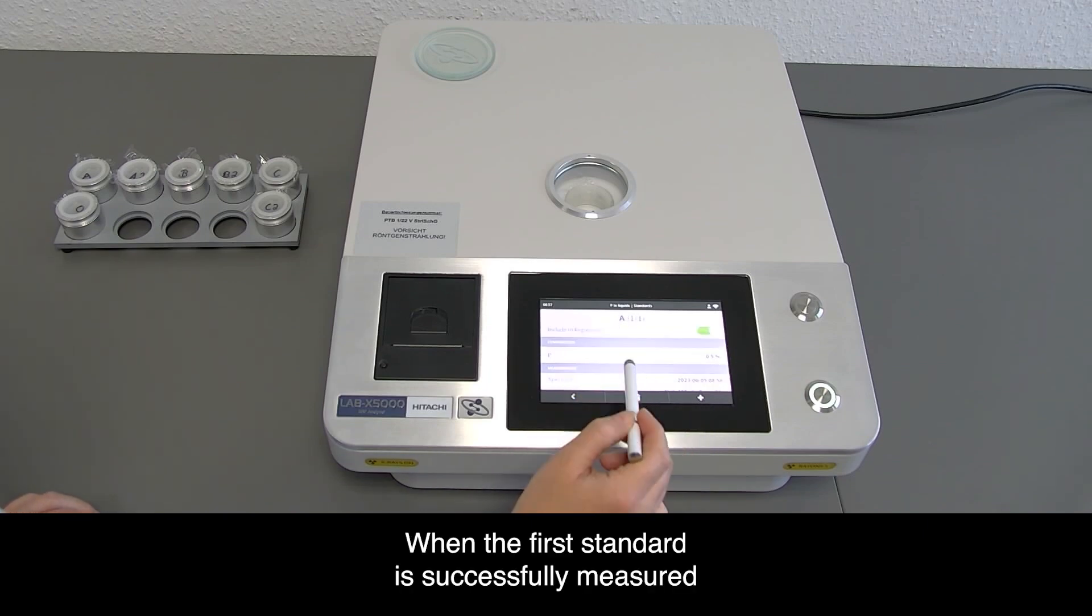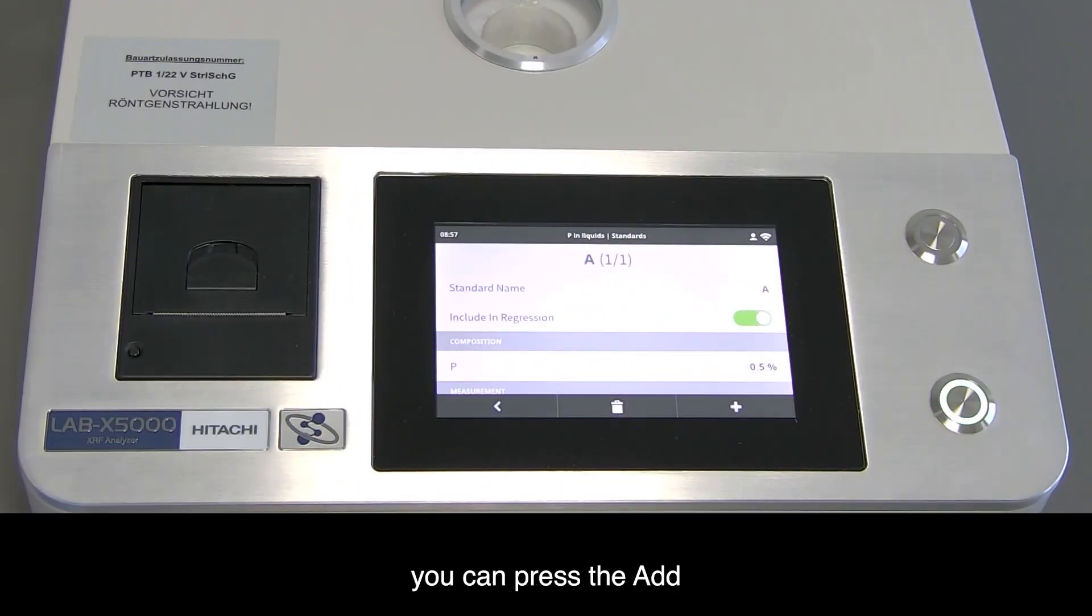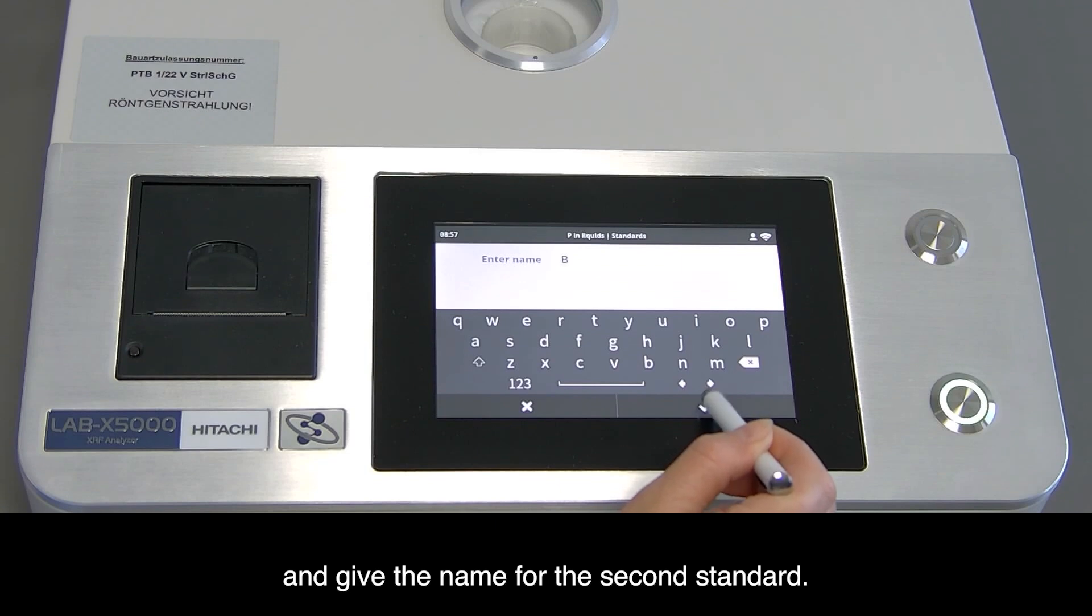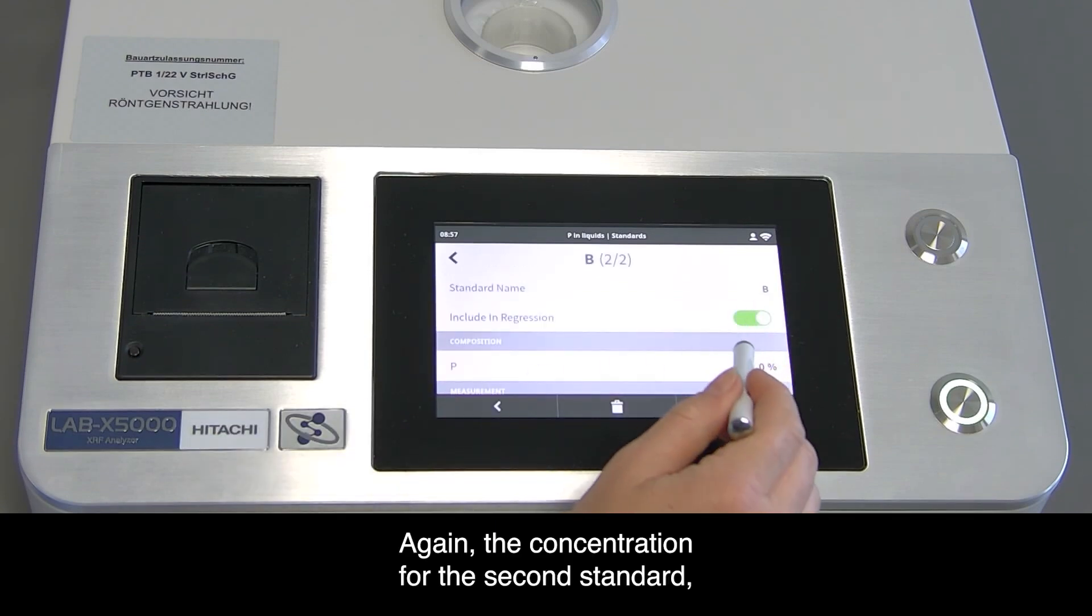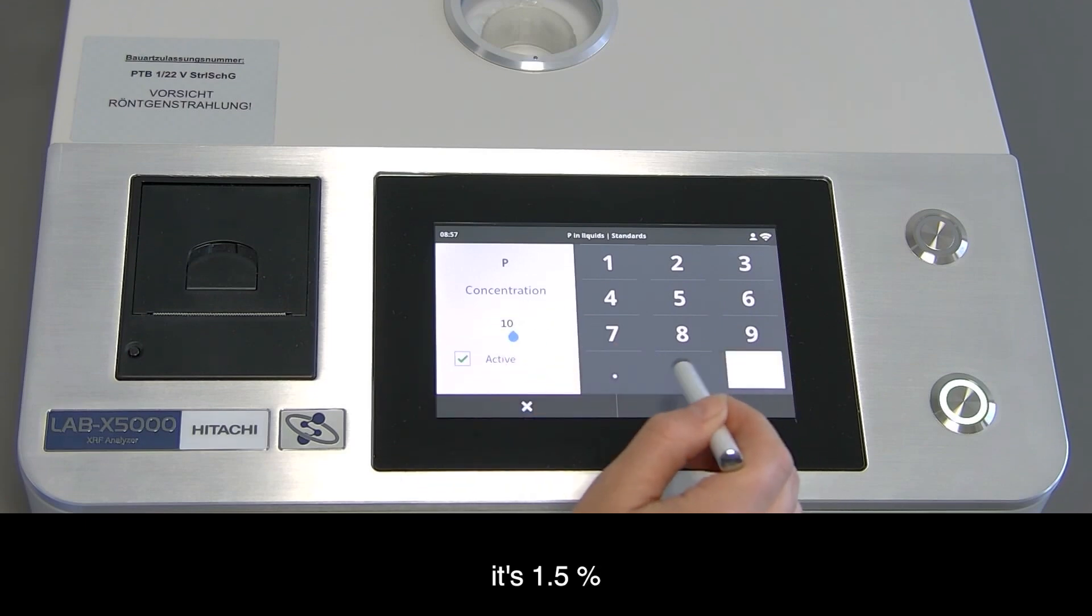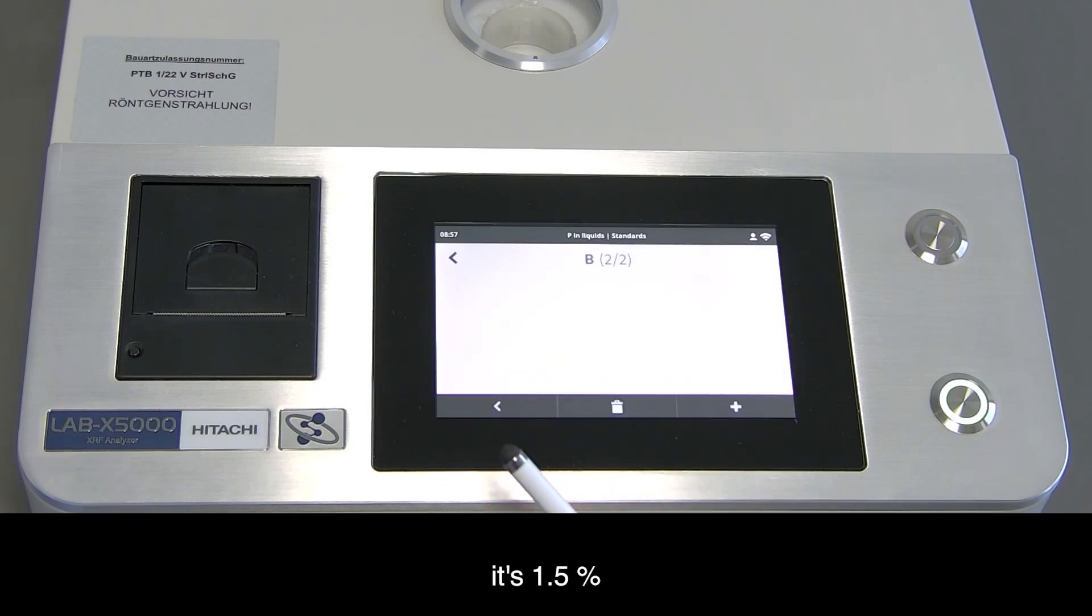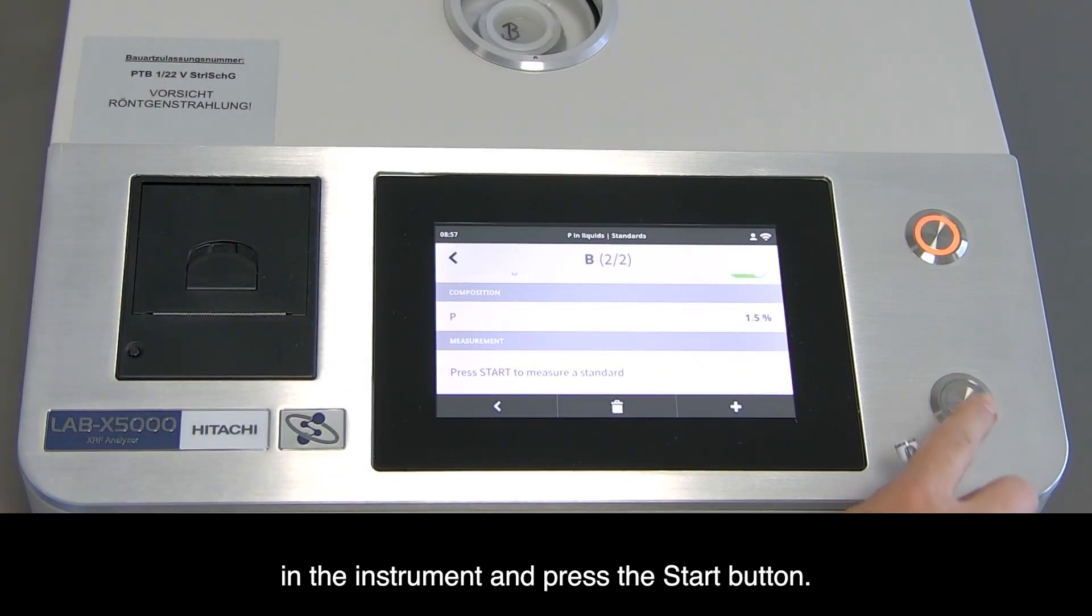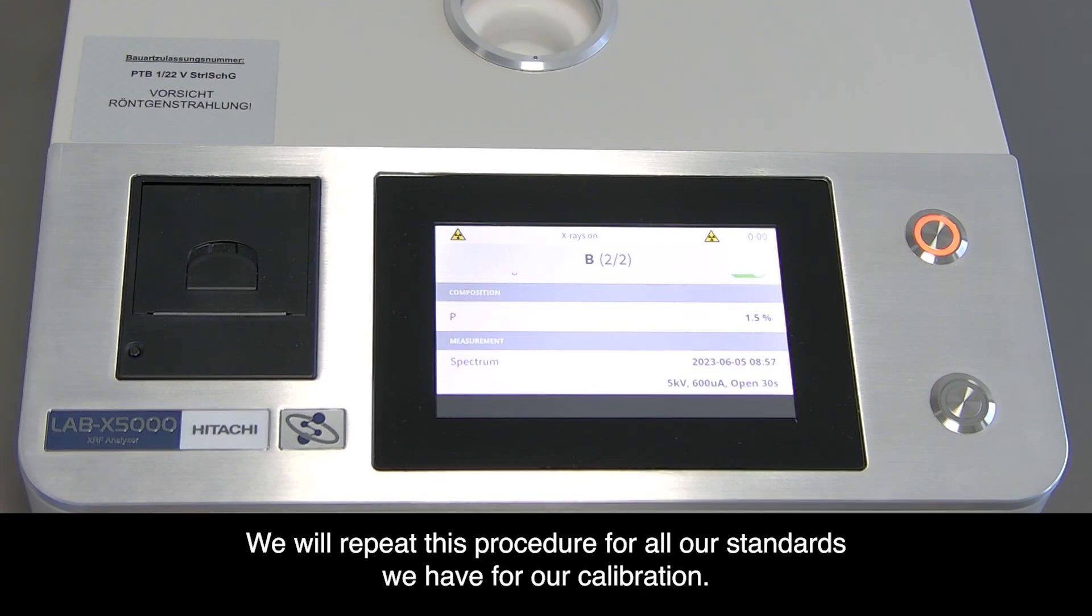When the first standard is successfully measured, press add and give the name for the second standard. The concentration is 1.5 percentage. Place the standard in the instrument and press start. We'll repeat this procedure for all our standards.